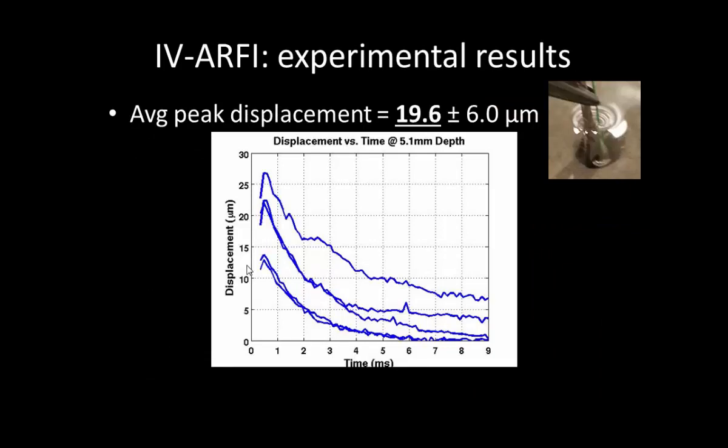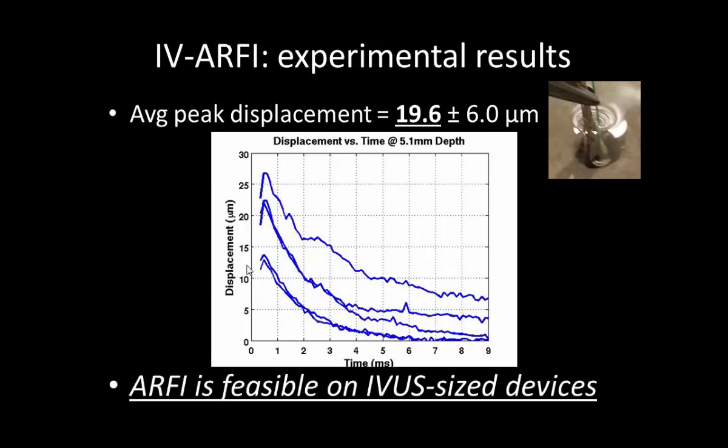Here are the results for five trials of this experiment. We achieved a peak displacement of, on average, 19.6 microns. We're not sure exactly why the displacements aren't decaying all the way to zero, but even adjusting for that, we're easily clearing our 10-micron minimum threshold goal for each run. This leads us to conclude that intravascular ARFI imaging is feasible using these small devices.